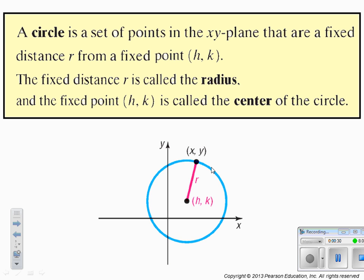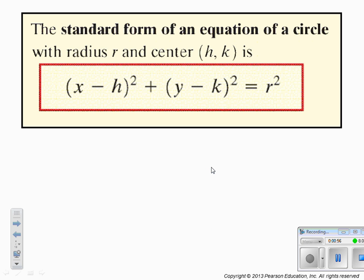A circle is a set of points that are a fixed distance r from a fixed point h comma k. So we have our center (h, k) and then we have all the points that are r distance from that center.